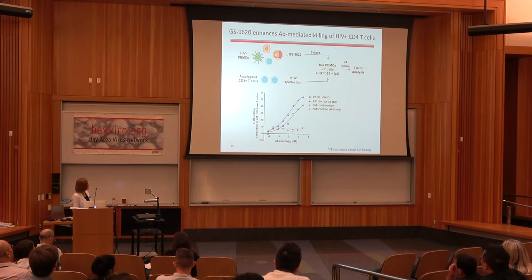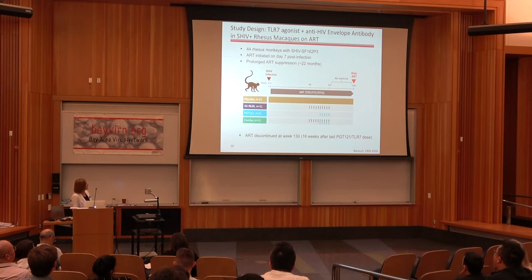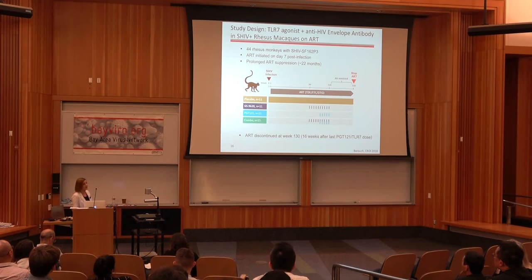The negative controls are mutants that don't allow binding to the FcR receptor. For our preclinical study, we tested the hypothesis of combining this therapeutic antibody with our TLR7 agonist. We split the animals into four groups and, similar to the first study, infected the animals for just one week before putting them on ART therapy. In this case we had to infect them with the SHIV virus because the antibody cannot neutralize SIV envelope but can neutralize HIV envelope, so we had to use this chimeric virus.